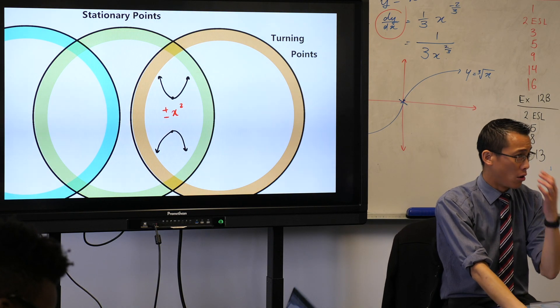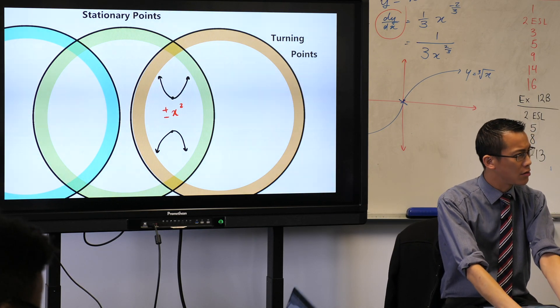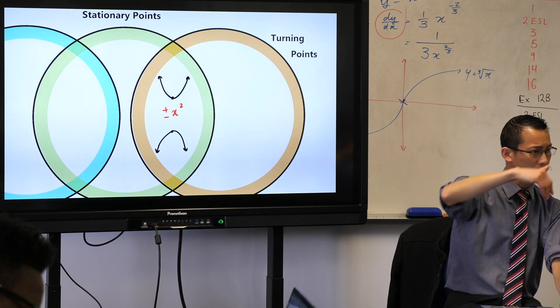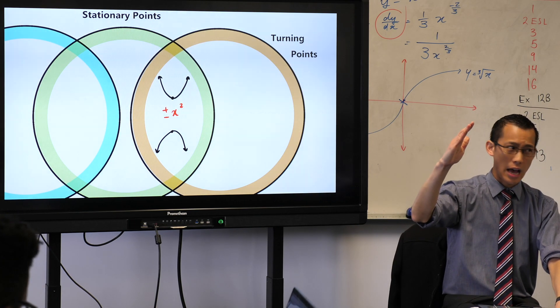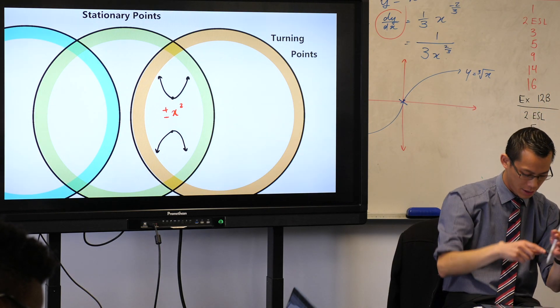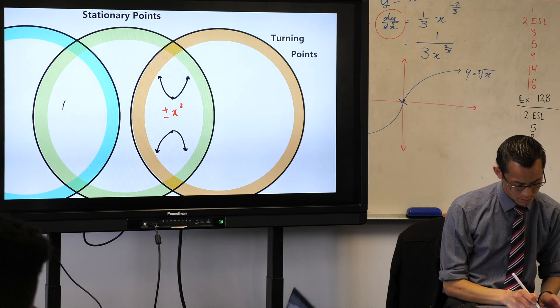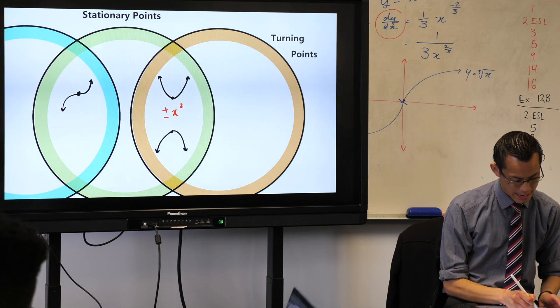Now, we saw, even in that very first question, that some stationary points do not do this increasing and then decreasing. Sometimes they increase, and then they stop for a moment, and then they just keep on increasing. So in other words, you have something that looks somewhat like this. Wow, it's a cubic.